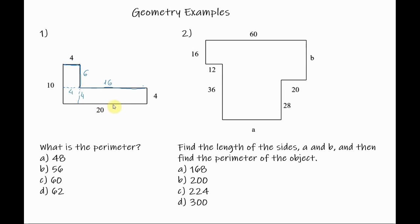Now we have all the sides and we can add them all up and we can find the perimeter. So we have 4 plus 6 is equal to 10, 16 plus 4 is equal to 20, and 10 plus 20 is 30 plus 20 is 50 plus 10 is 60. So the perimeter is C, 60.